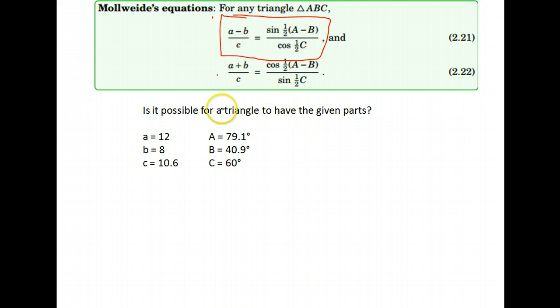I'm going to use that formula. So I want to do a - my a was 12 - minus b, b side was 8, divided by the side length c, so 10.6, is supposed to be equal to the sine of one half of angle A minus angle B. So angle A is 79.1 and angle B is 40.9 divided by cosine one half C.